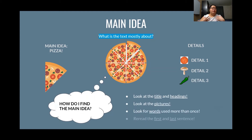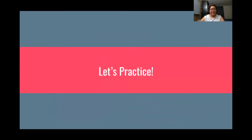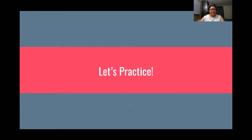When we think about how we find our main idea in any type of text, we look at our title and headings, we look at any pictures that are included, we look at words that are repeated, and we reread our first and last sentence. So let's practice that.